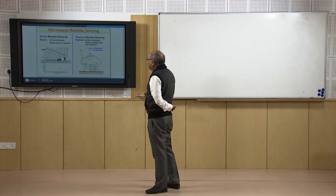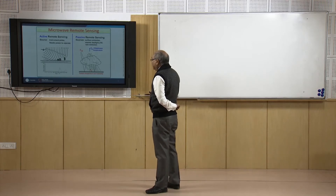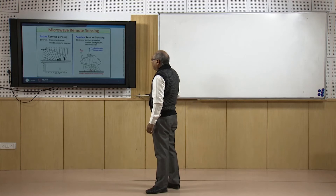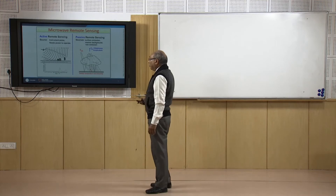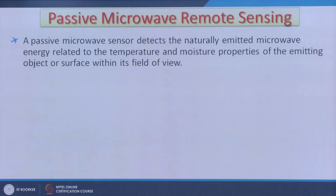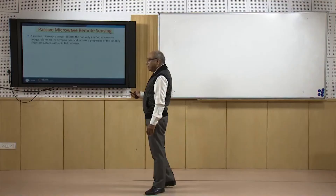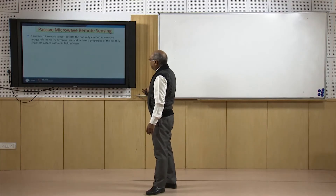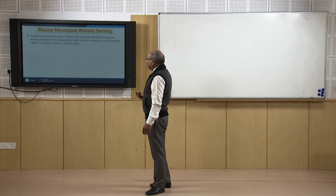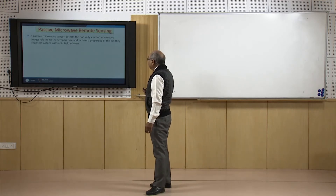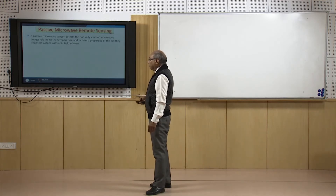In passive microwave, the illumination source is generally the sun or natural emissions, which can cause problems. In passive microwave, the sensor detects naturally emitted microwave energy related to the temperature and moisture properties of the emitting objects or surface within the field of view.